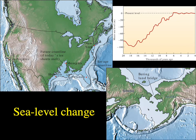If all ice sitting on continents — Antarctica, Greenland, and all smaller mountain glaciers — were to melt, sea level could rise about 70 meters, inundating large areas of coastal North America such as New York City. There are also socioeconomic consequences: in Tanzania, seasonal meltwater from Kilimanjaro is the main water source for many surrounding villages, and with over 80% of that ice gone since 1912, fresh water supply is a serious concern.